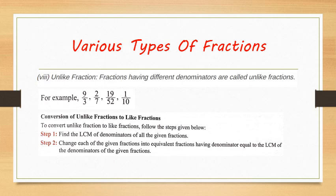Unlike fractions: when two or more fractions have different denominators, they are said to be unlike fractions. For example, 9 by 3, 2 by 7, 19 by 52, and 1 by 10 — all these are unlike fractions.